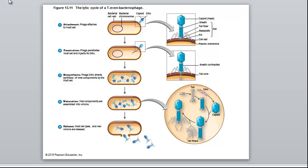Step two in the cycle is penetration. This phage is going to inject its nucleic acid into the host, and it works just like a syringe. The capsid, tail, and tail fibers at this point have completed their function. The only thing that's going to go into the host is the nucleic acid. Once inside, biosynthesis begins.